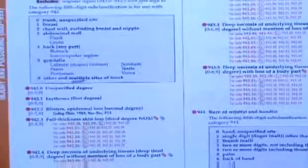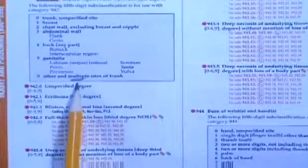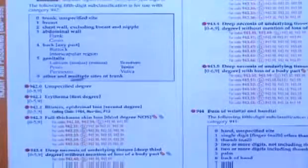the fifth digit will be the fifth digit of 9 other in multiple sites of the trunk. You can tell I've been here before. So what a common newbie mistake is, they'll say, oh, coding guidelines say I code the worst burn. So they code 942.3 and they use 4 for back. When they missed the point that they should have used 9 to indicate it's multiple burns in that category, the worst one being a third degree.